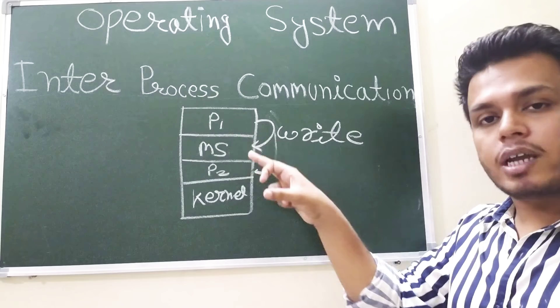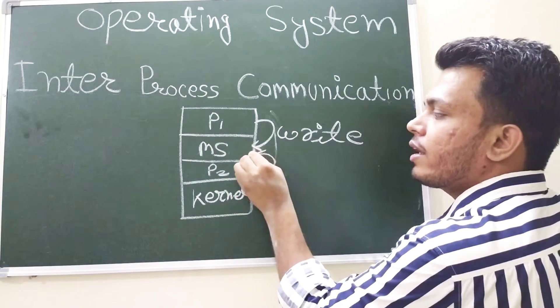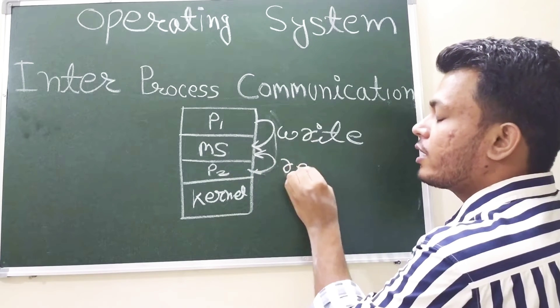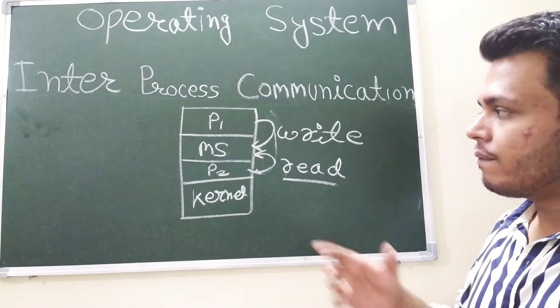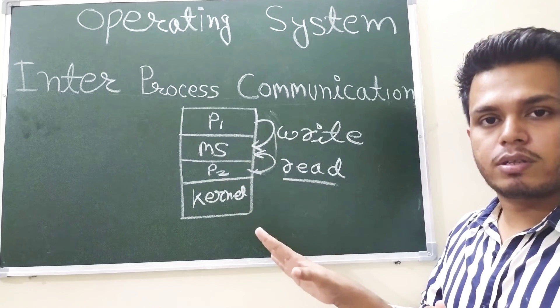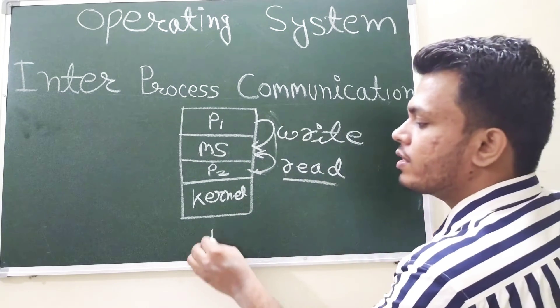And in the shared memory, P2 goes there and retrieves that message through the read operator, read operation. So that is how kernel is not interacting with the processes. So that is how the communication is done in the shared memory.